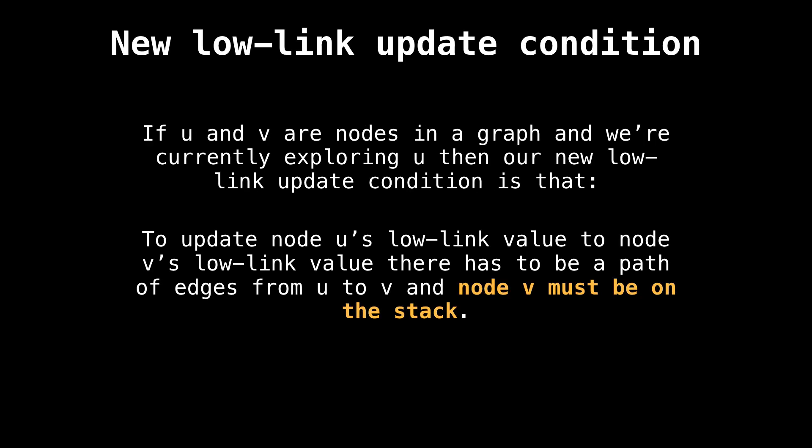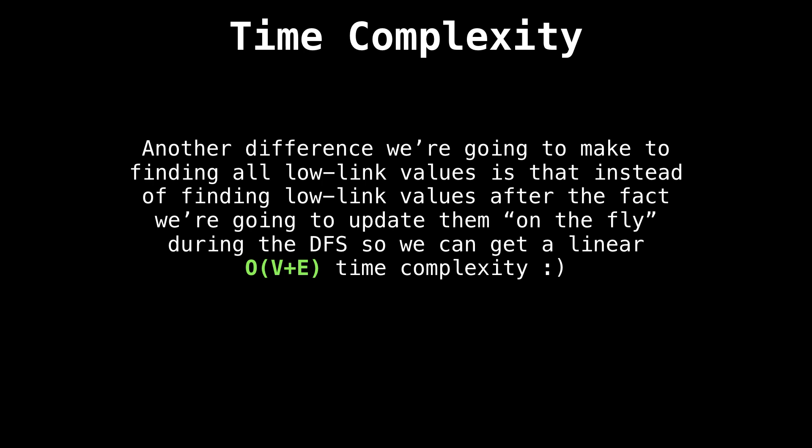Taking a step back, if variables u and v are nodes in our graph, and we are currently exploring node u, then our new low link update condition is: to update node u's low link value to node v's low link value, there has to be a path of edges from u to v, and node v must be on the stack. Another small difference we're going to make is that instead of finding all the low link values after the fact, we're going to update them as we do our depth first search — on the fly. This will allow us to obtain a linear time complexity.